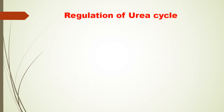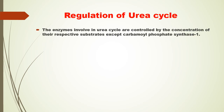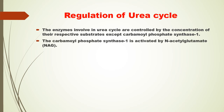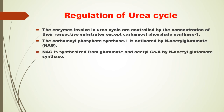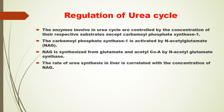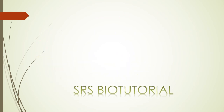Regulation of the urea cycle. All the enzymes involved in the urea cycle are controlled by the concentration of their respective substrates, except carbamoyl phosphate synthase-1. Carbamoyl phosphate synthase-1 is activated by N-acetylglutamate. N-acetylglutamate is synthesized from glutamate and acetyl coenzyme A by the enzyme N-acetylglutamate synthase. The rate of urea synthesis in the liver is correlated with the concentration of N-acetylglutamate. This is the overall reaction showing how the urea cycle is processed in the hepatocyte and the sequence of reactions discussed in this video.